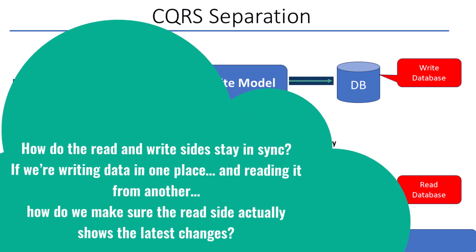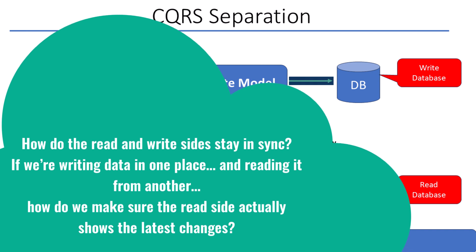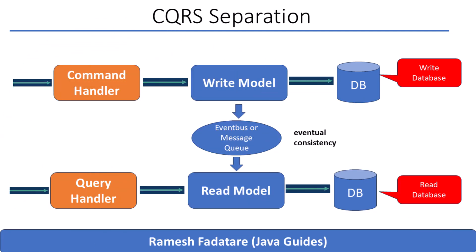You might be wondering: how do the read and write sides stay in sync? If we're writing data in one place and reading it from another, how do we make sure the read side shows the latest changes? Here's how it works. After a command is processed — say a customer places an order — the system sends out an event. That event might be something like 'order placed' or 'cart item added.' This event gets picked up by another part of the system, usually an event handler, and that handler updates the read model. So even though the command and query are separate, they're connected through these events. This happens really fast, often within milliseconds, but technically it's not instant — it's called eventual consistency. When a user places an order, the read model updates just after, and when they check 'My Orders,' the new order is already there. That's the beauty of CQRS: you keep reads and writes clean and separate, but still in sync through smart messaging.